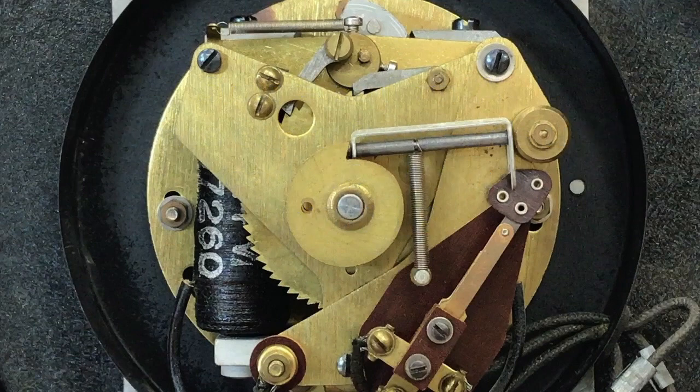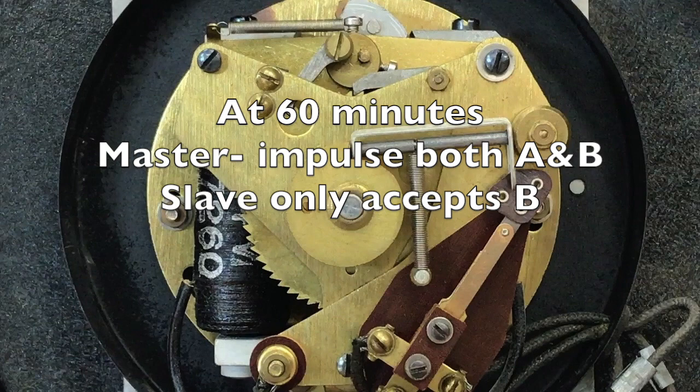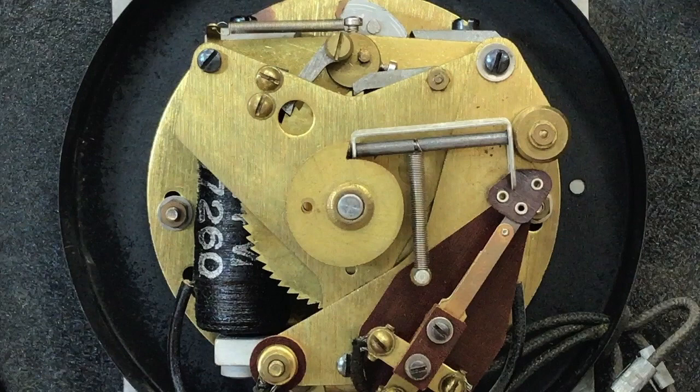The master sends impulses at 60 minutes 30 seconds on A and B, but the slave will only accept the B impulse. By accepting this impulse, all clocks now agree the time is exactly on the hour.